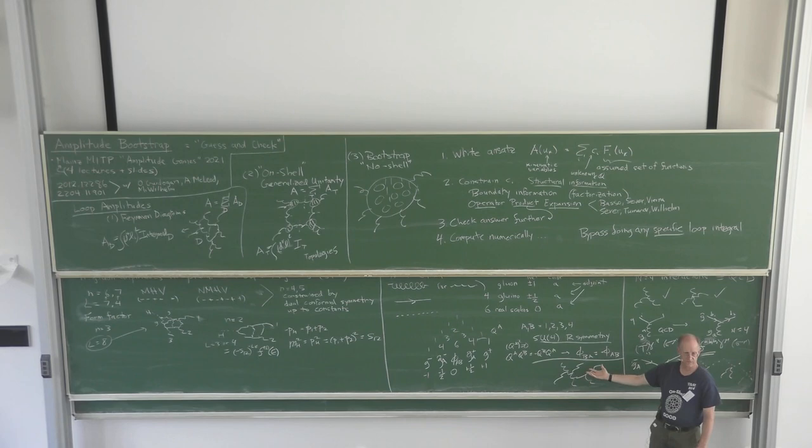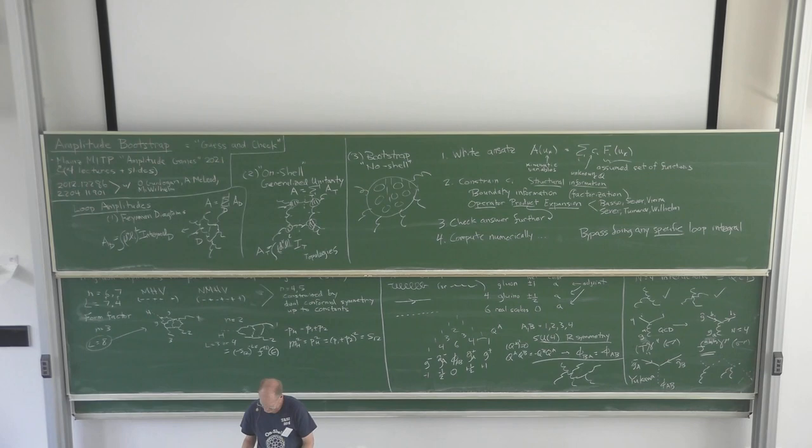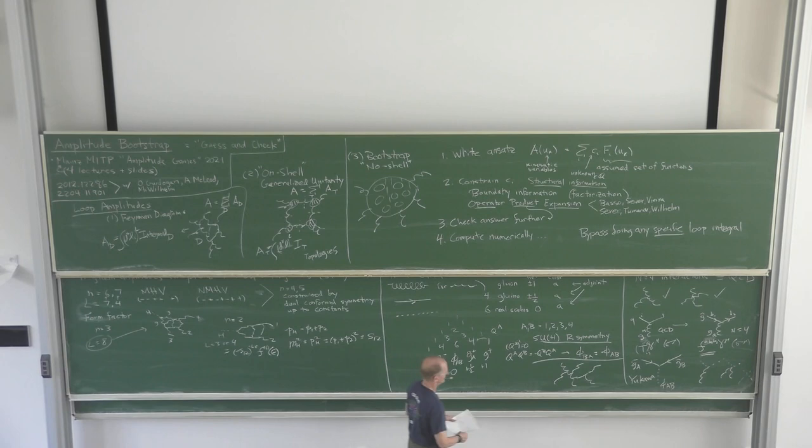Any supersymmetric identity you can prove — and Shruti will talk about that tomorrow — automatically holds for n-gluon amplitudes in QCD too. That explains a lot of the structure of the Parke-Taylor amplitudes. But at loop level they start to become quite different beasts.